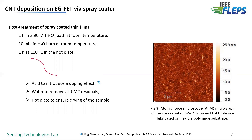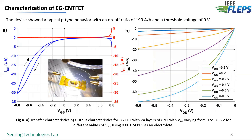After this final step, the devices were ready to be electrically characterized. The device characterization was performed in 1 millimolar PBS. Both transfer and output curves were recorded. In figure 4a, you can see the transfer characteristic. Both the forward and backward sweeps were recorded using a gate-to-source voltage of +0.8 to −0.8 V, while the drain-to-source voltage was kept constant at −0.1 V. From the transfer characteristic, we extracted an on-off ratio of 190, while the threshold voltage was 0 V. Importantly, the gate current remained at least two orders of magnitude lower than the drain current.